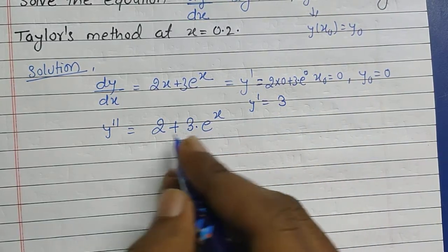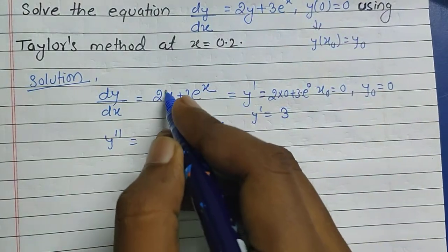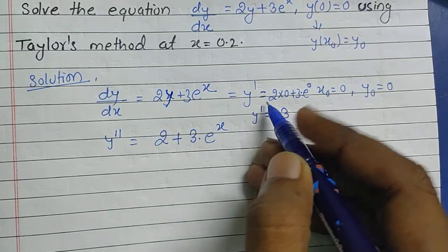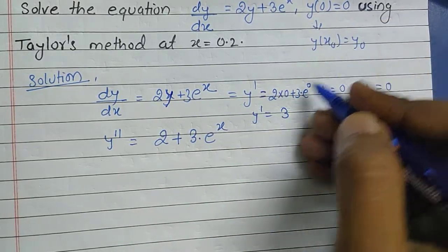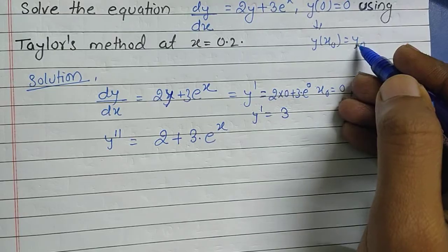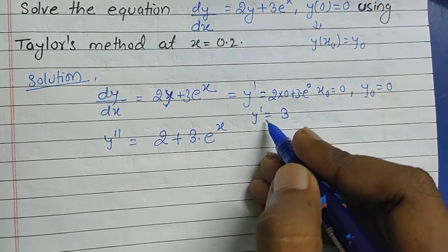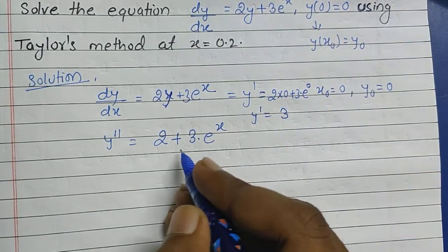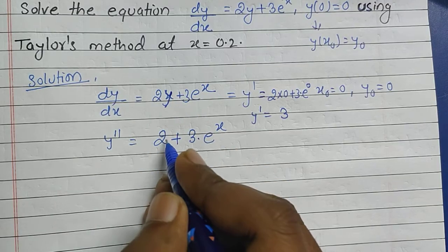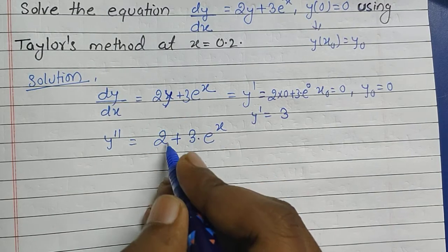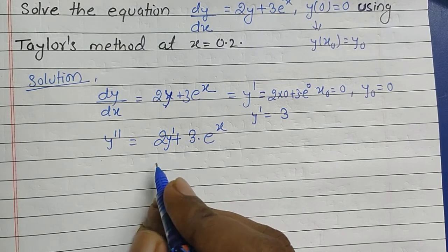Now, in the equation, this term is y, so 2 times y means y naught, and y naught equals 0, so this will be 0. Again y' = 3. The derivative of y with respect to x is dy/dx, which is written as y'.